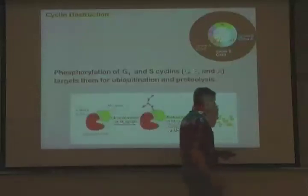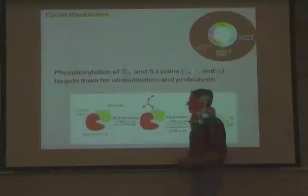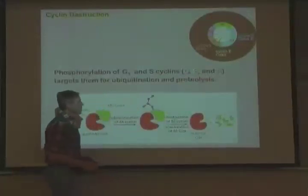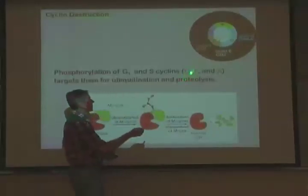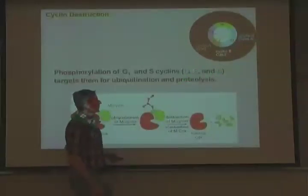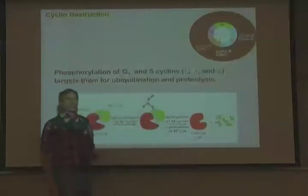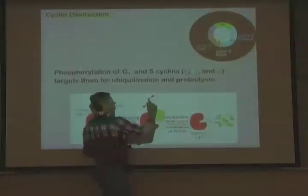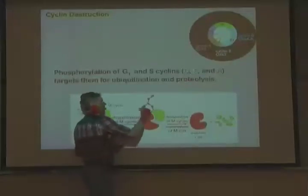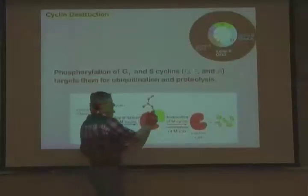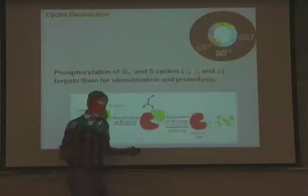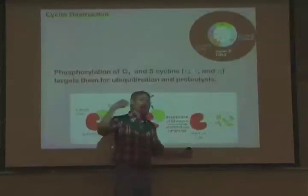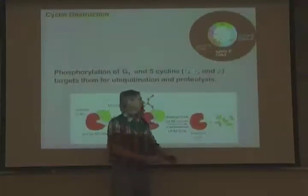Cyclins are destroyed by ubiquitination and proteolysis. Most cyclins — D, E, and A — are ubiquitinated in response to phosphorylation. The cyclins are phosphorylated, which targets ubiquitin chains to be added covalently, modifying the cyclin, which then targets it to the proteasome. The proteasome is like a meat grinder: anything that goes in gets destroyed, stuff goes in and doesn't come out.